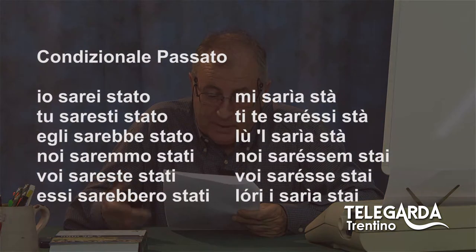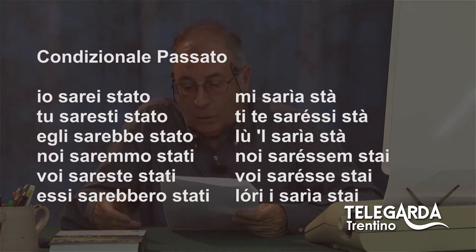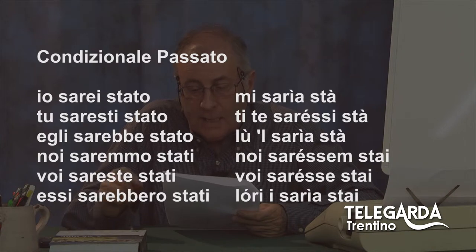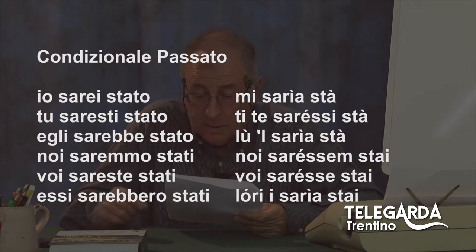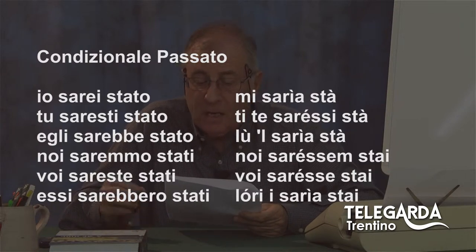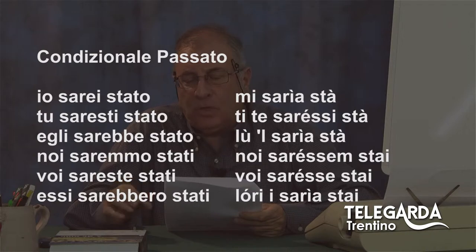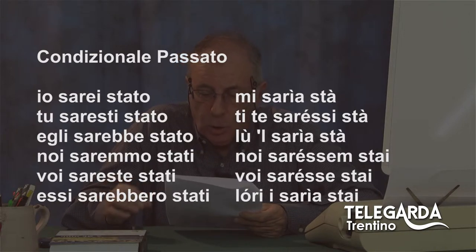Andiamo al condizionale passato, che è semplicissimo: basta aggiungere stato per l'italiano e sta per il dialetto. Io sarei stato, tu saresti stato, egli sarebbe stato, noi saremmo stati, voi sareste stati, essi sarebbero stati. Quindi: mi saria sta, ti te saresti sta con l'accento fonico sulla E chiusa, l'ul saria sta con accento tonico sulla I. Noi saresem stai, accento fonico chiuso sulla E. Voi sarese stai, accento tonico e fonico chiuso sulla E. Lori, con accento fonico chiuso, i saria stai.